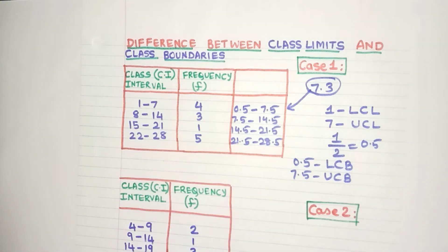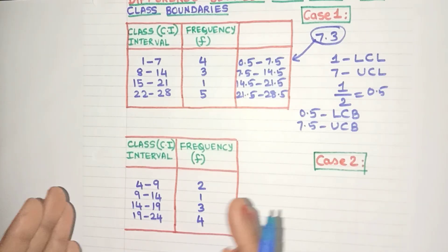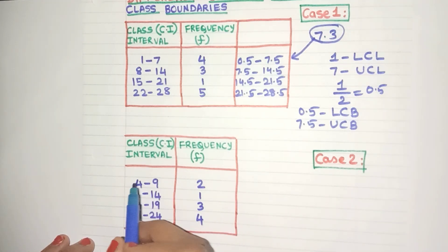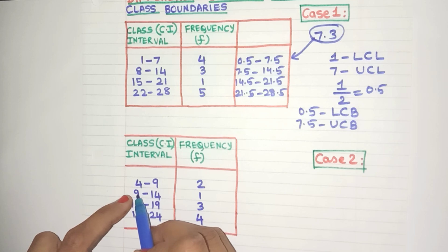Now let's go to the second case. Here we have again class intervals, frequency. Just have a look at the class intervals, 4 to 9, 9 to 14 and so on. Do you observe any gap between the upper class limit and the lower class limit of the previous class? Not at all.